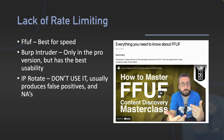For lack of rate limiting, FFUF is the best for speed. Burp Intruder has it in the pro version and definitely has the best usability — FFUF you have to fiddle with it a little bit, but it's probably worth it. Codingo's got a fantastic guide all about FFUF and how to master it. IP Rotate — don't use it. It produces so many false positives and N/As. You won't get a bounty for using IP Rotate because you're not actually bypassing the rate limiting — the rate limiting is in place. Don't use IP Rotate.